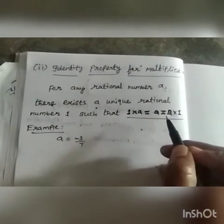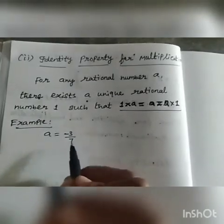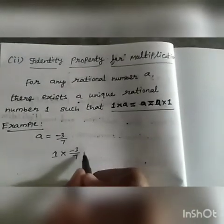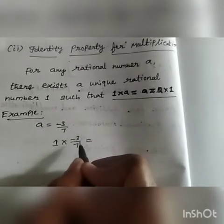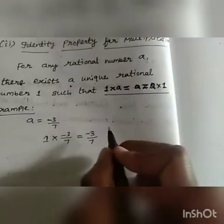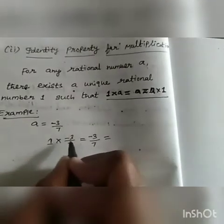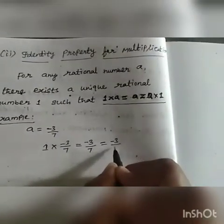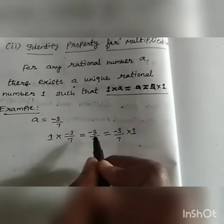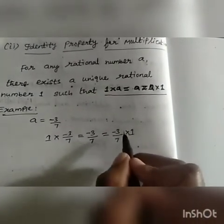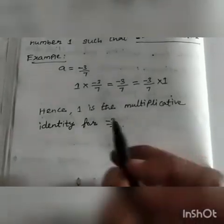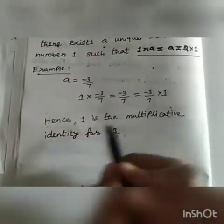Let us see the example. We take A = -3/7. So 1 × (-3/7) = ? When we multiply any number by 1, we get that same number. So 1 × (-3/7) = -3/7. Changing the order: -3/7 × 1 = -3/7. So 1 is the multiplicative identity for -3/7.